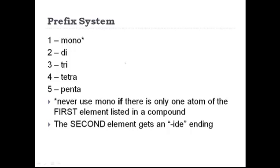Here's a list of the prefixes for numbers one through five: 1 is mono, 2 is di, 3 is tri, 4 is tetra, 5 is penta. You use these prefixes to indicate how many atoms of each element there are in a particular compound. Never use mono if there is only one atom of the first element listed in a compound. The second element gets an "-ide" ending.